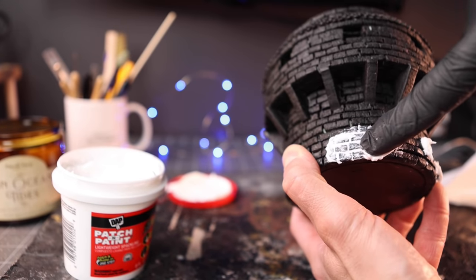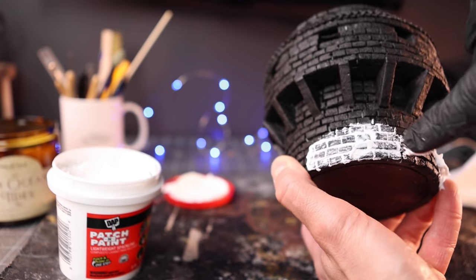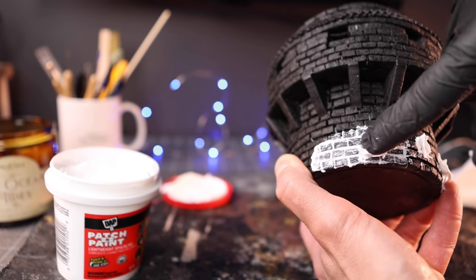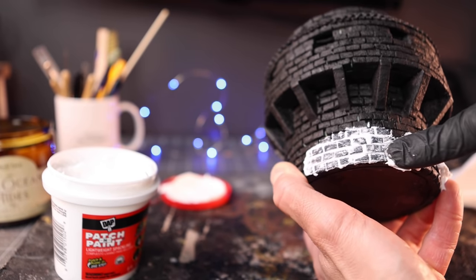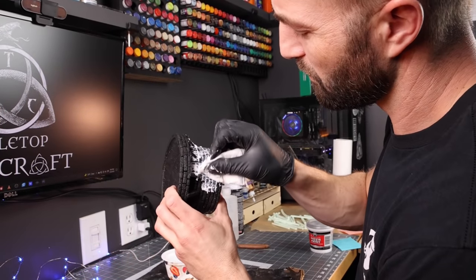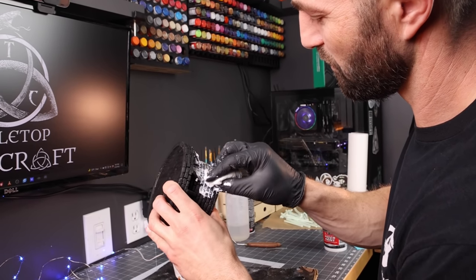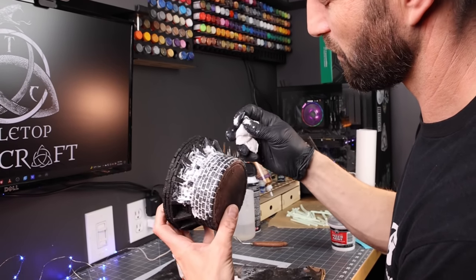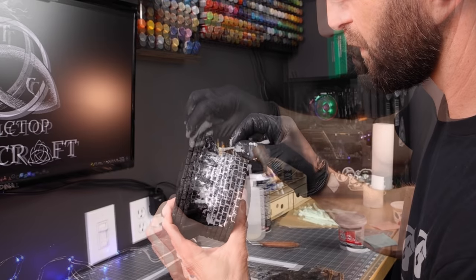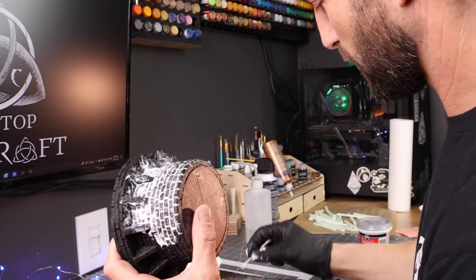Alright, now once this is Mod Podged, we're breaking out that patch and paint and we're going to give ourselves a really cool mortar look to all of these bricks. You want to use a glove, press this stuff into there, but here's what you don't want to do. You don't want to rub it back and forth, back and forth because there is a little bit of grit to that and it will take away some of the texture on your foam. Don't be afraid to wipe this down with a wet paper towel. Again, it's going to cure. It might take a day or so, but it's going to leave you with a really awesome look once you're done.